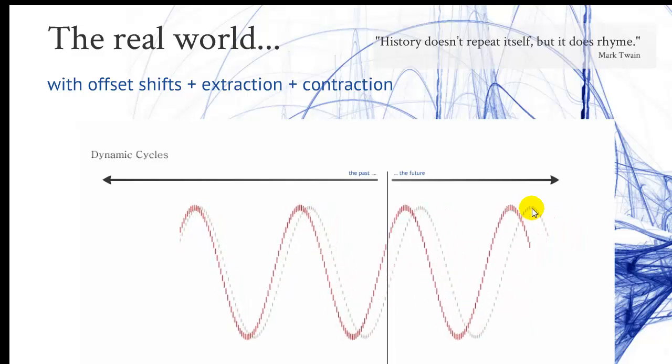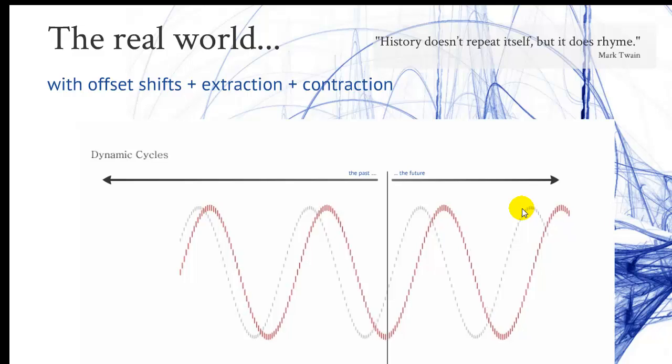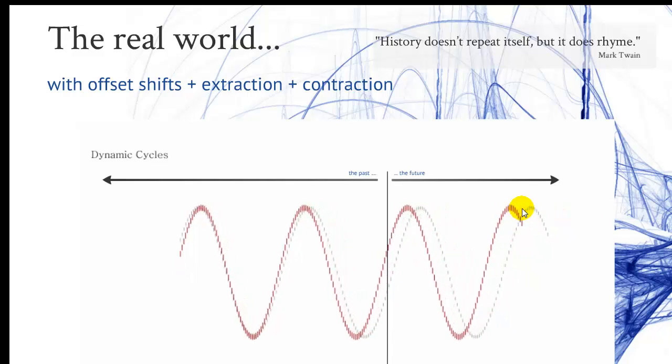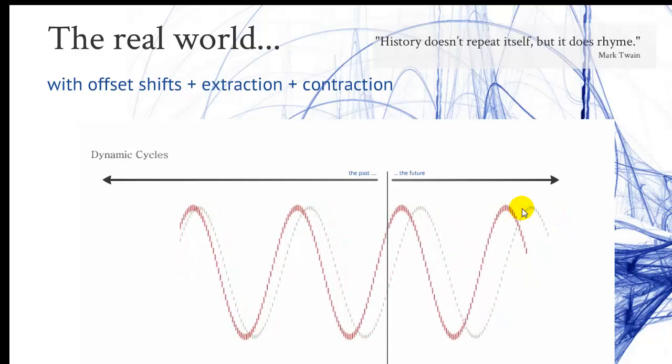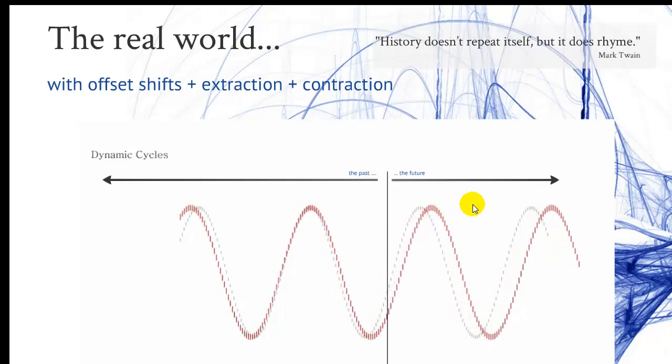you will see that you have a huge deviation between the theoretical static cycle and the dynamic component, which is moving at a very high rate. This causes a real headache if you use static cycles on the future, on the right side of the chart, but the right side is quite the important one.